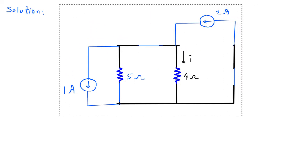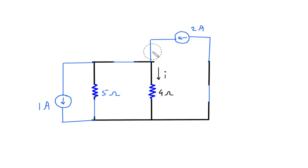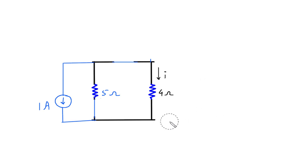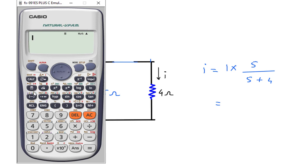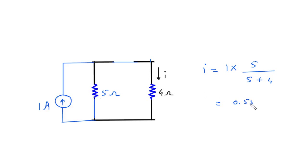We will redraw the circuit with 1 ampere upwards. Now we have to find this I. So according to the current division rule, I is equal to this current which is 1 ampere, multiplied by the opposite branch resistance which is 5 ohm, divided by total resistance which is 5 ohm plus 4, so this will be 5 by 9, which is 0.555 ampere.